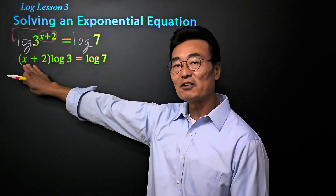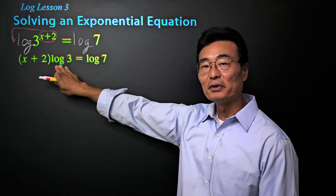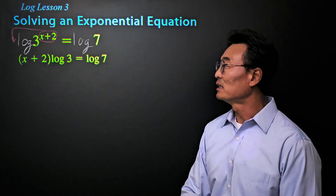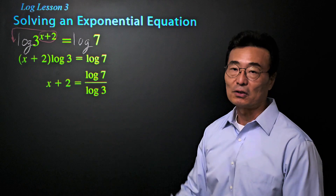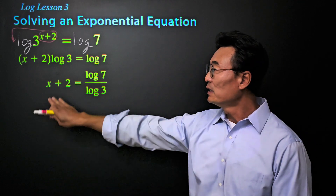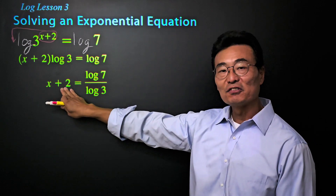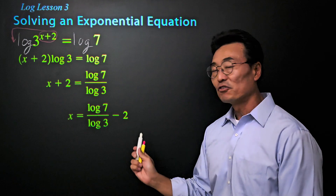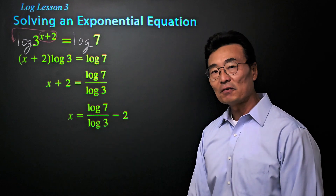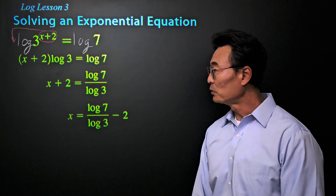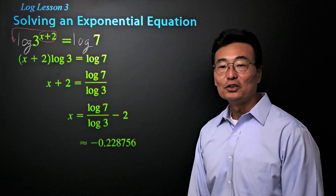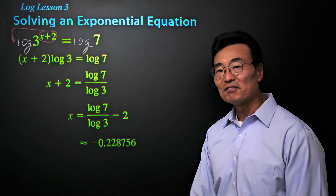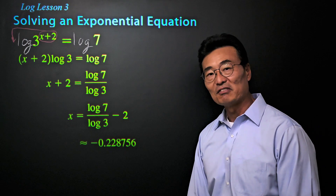Then since we're trying to solve for x, we need to isolate the x. First, we want to get rid of that log of three by dividing it on the left and the right side, where we get x plus two equals log of seven over log of three. Finally, to make x by itself, all we need to do is subtract the two, where we get x equals log of seven over log of three minus two. When you put that in the calculator, you'll get x equals negative 0.228756, rounded to six decimal places.